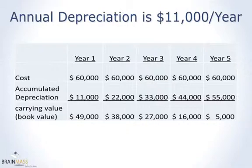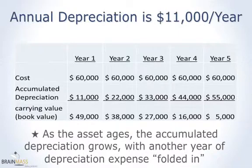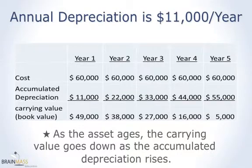Look at the second year — now we have two years' worth in there. Third year, three years' worth. Fourth year, four years. Fifth year, five years' worth. And what happens to the carrying value or book value of this asset over time? It's on the balance sheet at a cost of $60,000, but it's going down each year because the contra asset — the accumulated depreciation account — reduces the net book value of that asset. As the asset ages, the accumulated depreciation grows because another year of expense has been added. So you can see the accumulated depreciation and the carrying value go down over time.